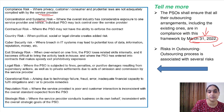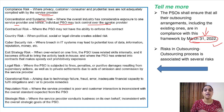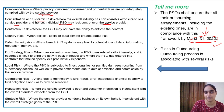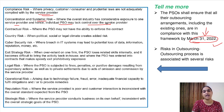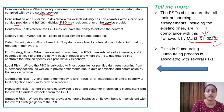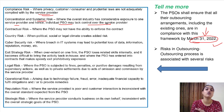Then there is concentration and systemic risk, where the overall industry has exposure to the same service provider. An individual PSO may not have complete control over the service provider since that service provider might be providing services to different PSOs, not only one particular PSO.